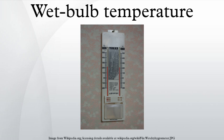Living organisms can only survive within a certain temperature range. When the ambient temperature is excessive, humans and many animals cool themselves below ambient by evaporative cooling of sweat. This helps to prevent potentially fatal hyperthermia due to heat stress. The effectiveness of evaporative cooling depends upon humidity. Wet bulb temperature, or more complex calculated quantities such as wet bulb globe temperature — which also takes account of solar radiation — give a useful indication of the degree of heat stress, and are used by several agencies as the basis for heat stress prevention guidelines.